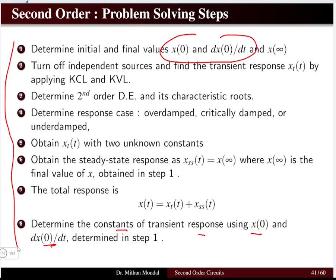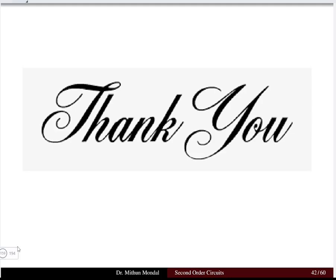The total response is x(t) = transient + steady state. Determine the transient constants A1 and A2 using the initial conditions x(0) and dx/dt(0). These steps apply to any second-order circuit, whether series or parallel. The total response is the sum of the natural response plus the forced response — the forced response being whatever source is connected in the network.